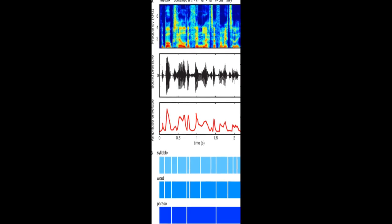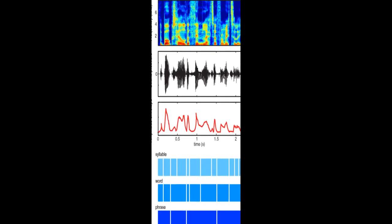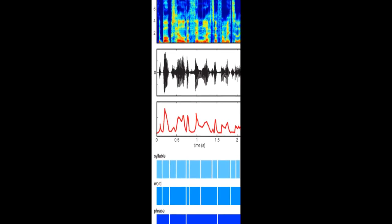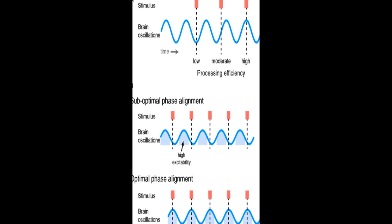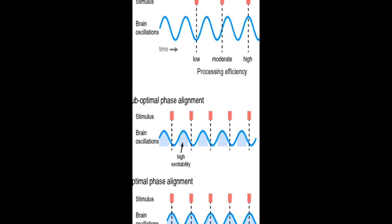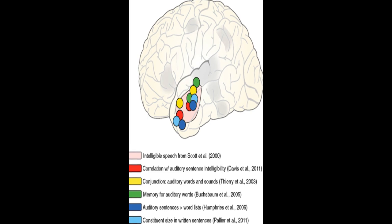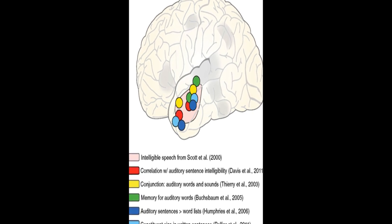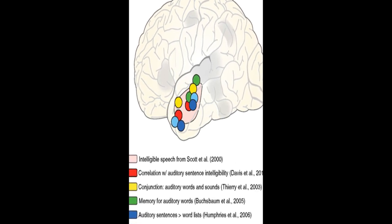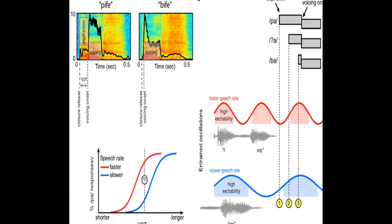Behavioral studies show that listeners rely on this information for speech intelligibility. Neuroimaging data suggests that phase locking by ongoing cortical oscillations to low-frequency information in the speech envelope encodes a prediction of when important events are likely to occur, increasing sensitivity to relevant acoustic cues.